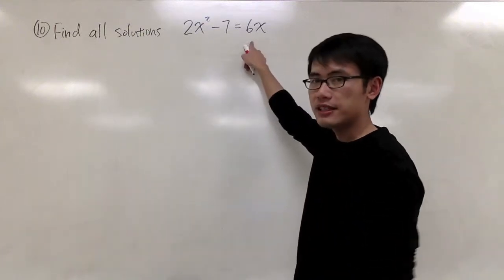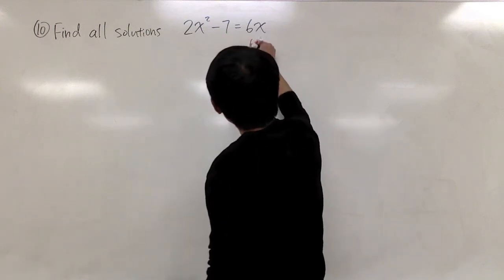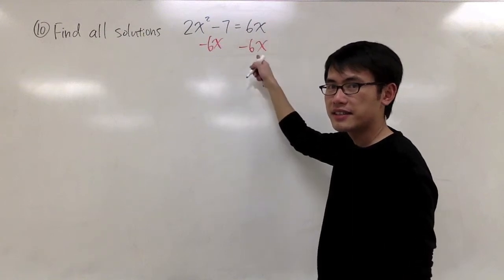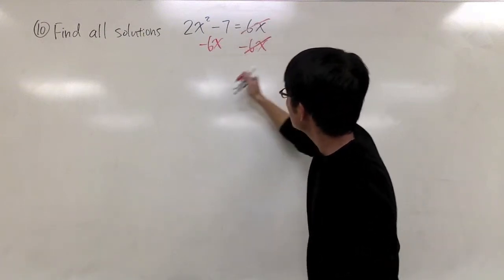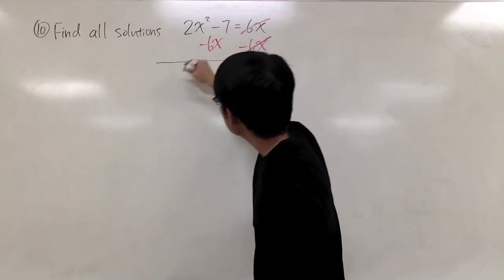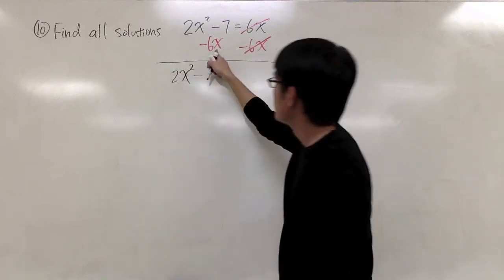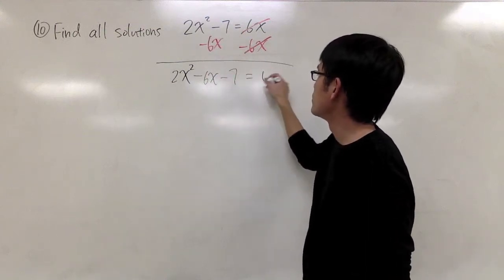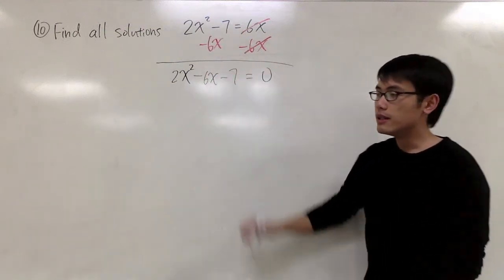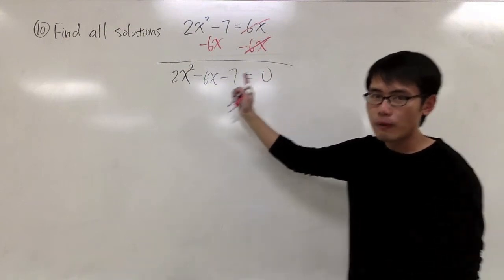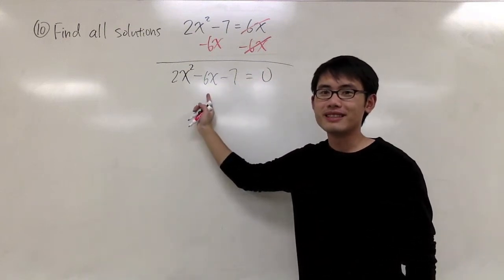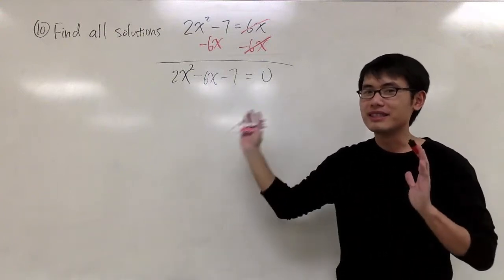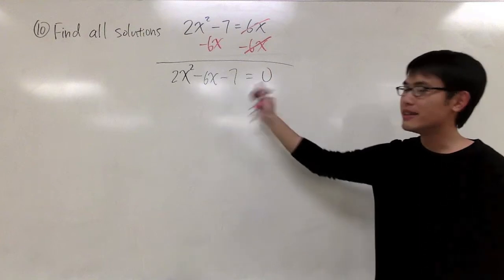We see we have 6x on the right-hand side. Let's subtract 6x on both sides. The 6x and the negative 6x cancel out to be 0, and we get 2x squared minus 6x minus 7 is equal to 0. Now we should try to factor this, but unfortunately, after trying all combinations, this is not factorable.